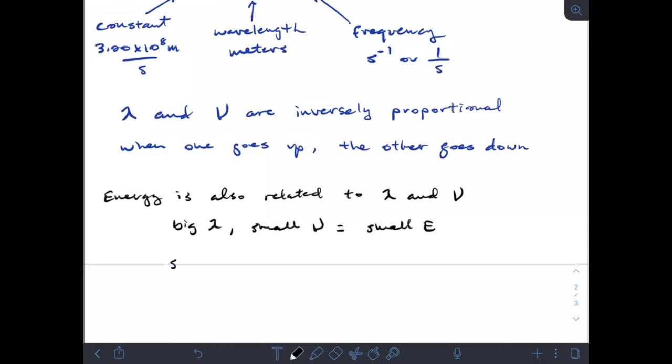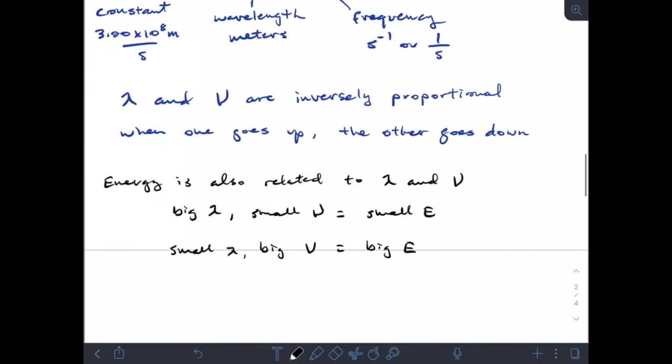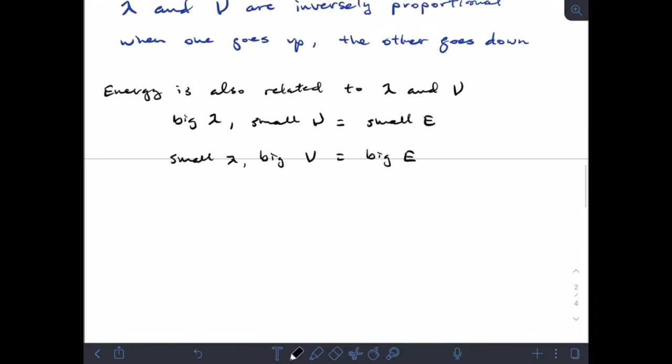If I have a small wavelength, then that means I have a big frequency, and that means I have big energy. The way we can calculate this energy is with a lovely equation: E, the energy, equals h times ν. This is the energy of one photon in joules.